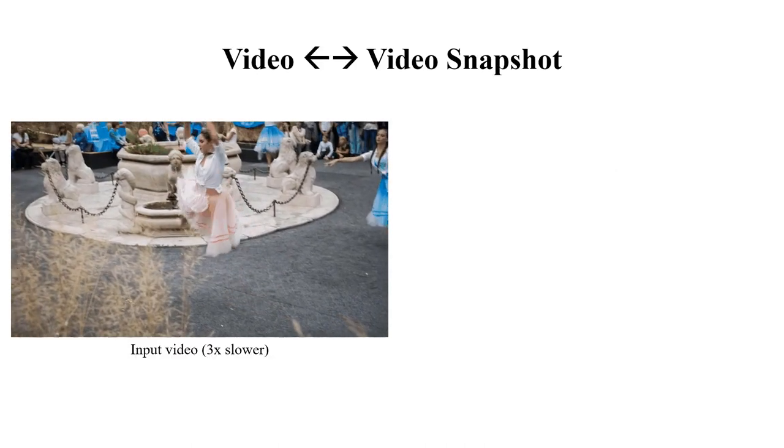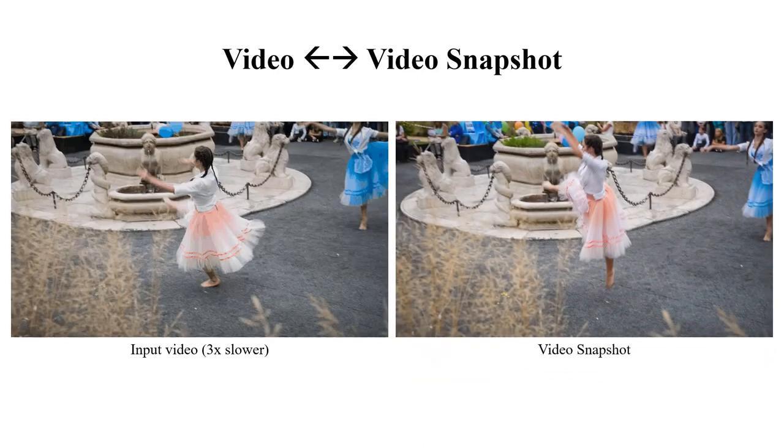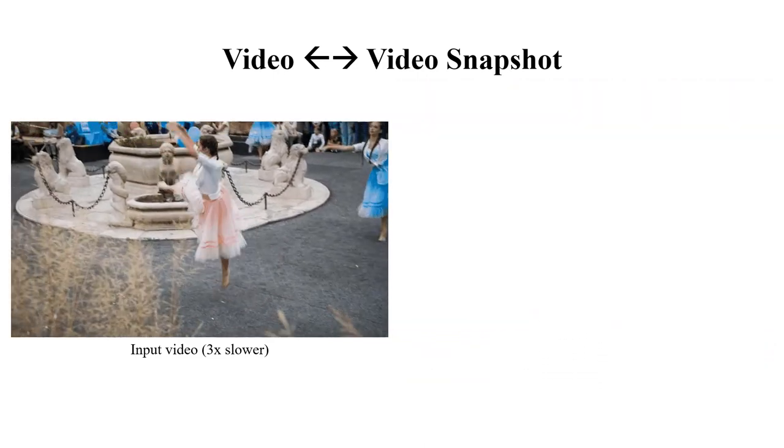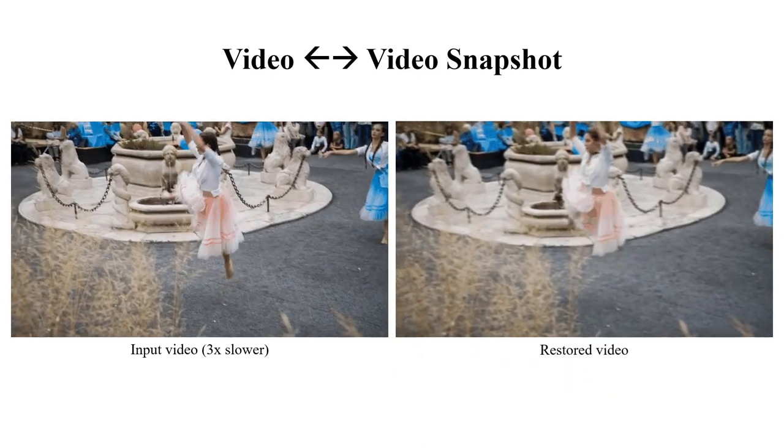The proposed network takes a short video as input and embeds it into a single image called Video Snapshot. Later, it can be restored back to a longer and smoother video.